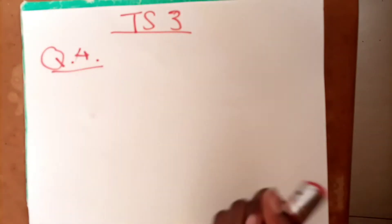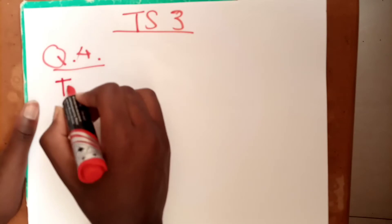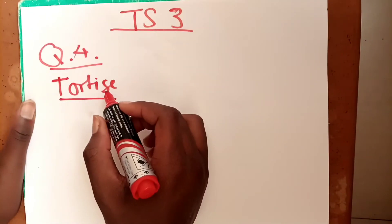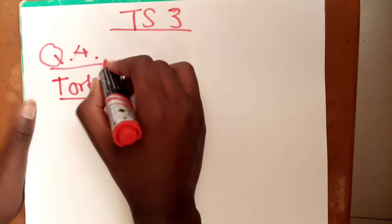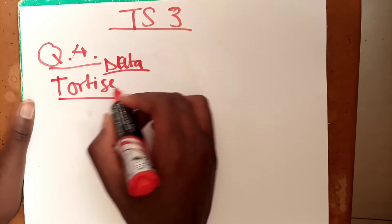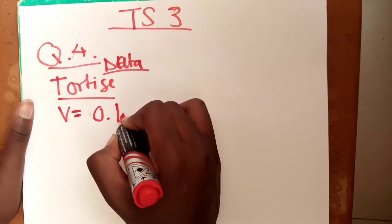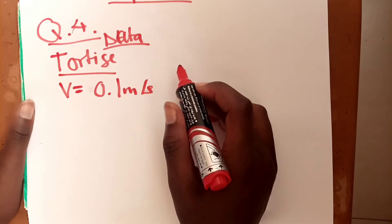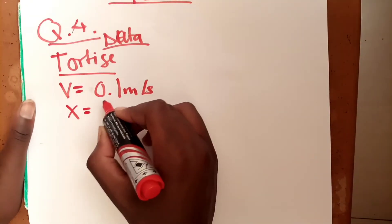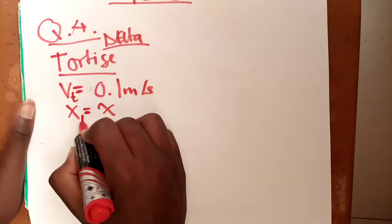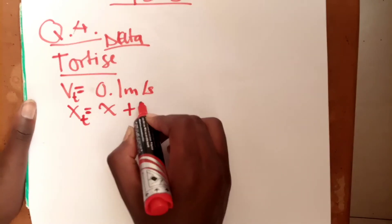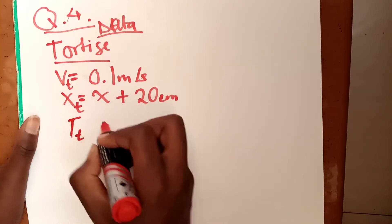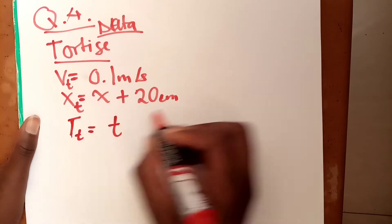This question may seem hard but it's actually easy when you lay out the details. I'm going to analyze the motion of the tortoise first. The velocity of the tortoise is 0.1 meters per second. The distance of the tortoise will be given by x plus 20 centimeters, and the time t is just set as t.